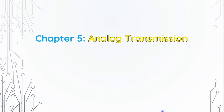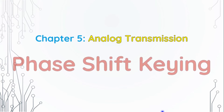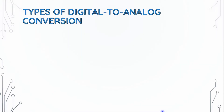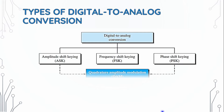Chapter 5: Analog Transmission — Phase Shift Keying. Types of Digital-to-Analog Conversion include Amplitude Shift Keying (ASK), Frequency Shift Keying (FSK), Phase Shift Keying (PSK), and Quadrature Amplitude Modulation (QAM). Today we will introduce Phase Shift Keying.